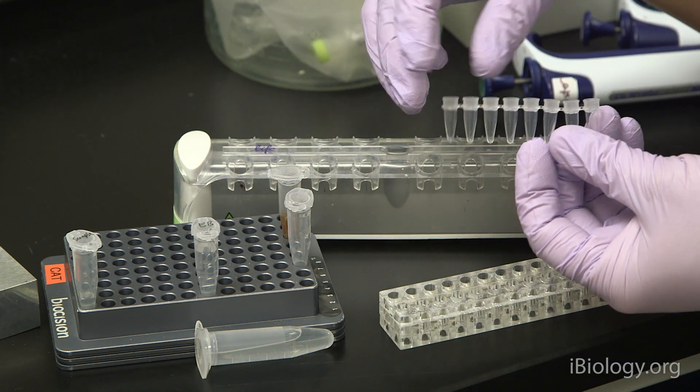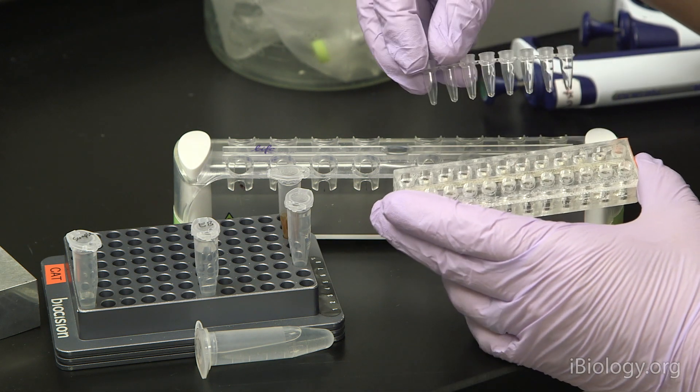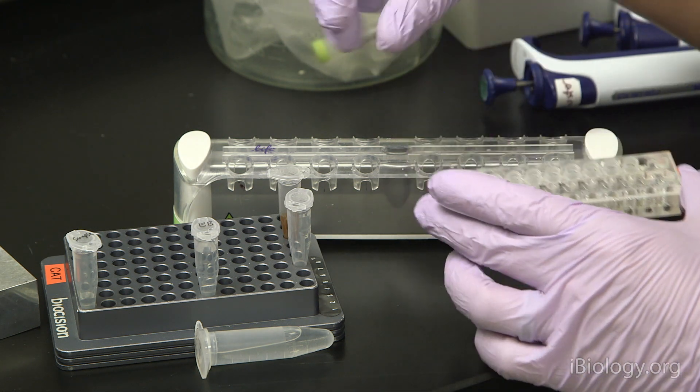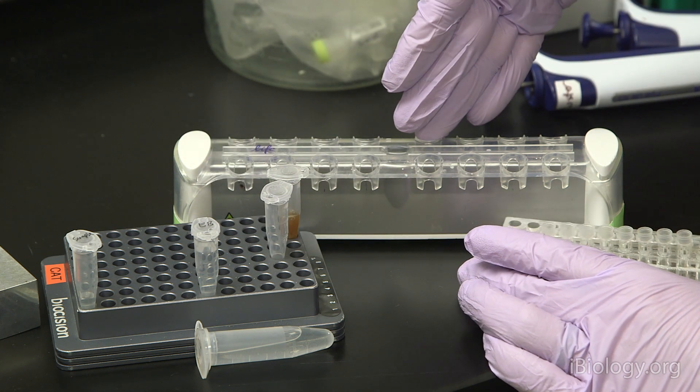A lot of these purifications are typically done in PCR tubes and small magnets like this. But for the purpose of today's video, we'll be using Eppendorf tubes because they're a little bit easier to visualize, and this larger magnet.